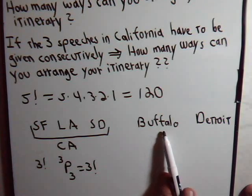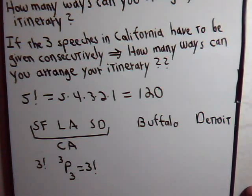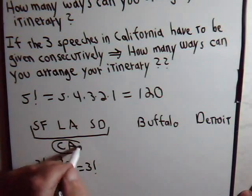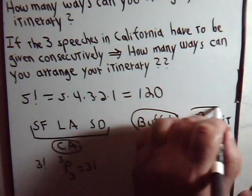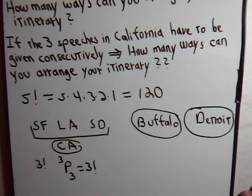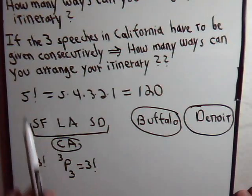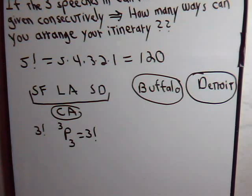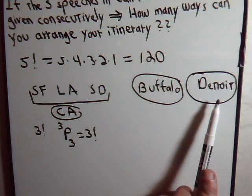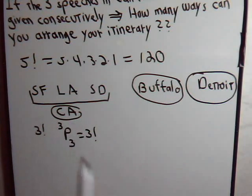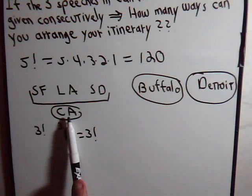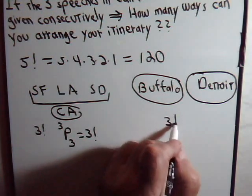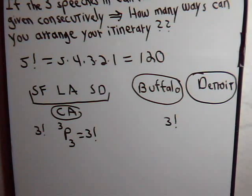But then we also have Buffalo and Detroit. So we can think of it as three entities: California, Buffalo, and Detroit. You can think of California as consolidated into one block. So to answer this part of the question, we think of how many different ways we can set up an itinerary between Detroit, Buffalo, and the California block — just three separate entities — which can be done three factorial number of ways.